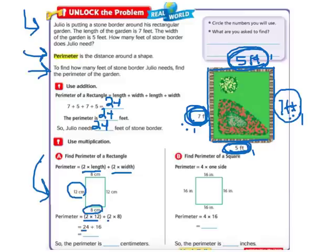The width is 8, so we'll do 2 times 8 is 16. And then we just add 24 and 16, which is 40. So the perimeter of that rectangle is 40, and it's centimeters.